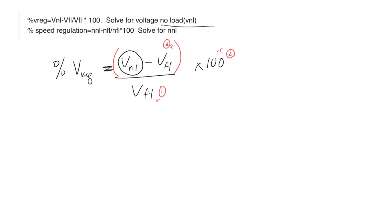So if you want to get rid of this voltage full load on the bottom, I'd multiply both sides by voltage full load. These would cancel out. And then let's just write down what I have. So I have voltage full load times the percent voltage reg, whatever that is, is equal to voltage no load minus voltage full load times 100.